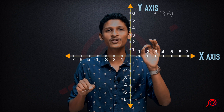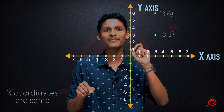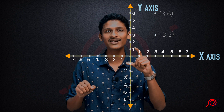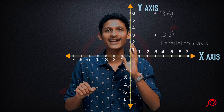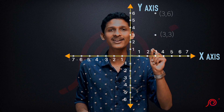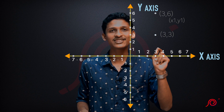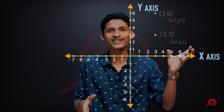Now we have two new points. Let's try this. We have one point at (1,3) and another at (1,6). If we join these two points using a line, that line is parallel to the y-axis because the x-coordinate is the same. We can find the distance using the formula with (x1, y1) and (x2, y2).